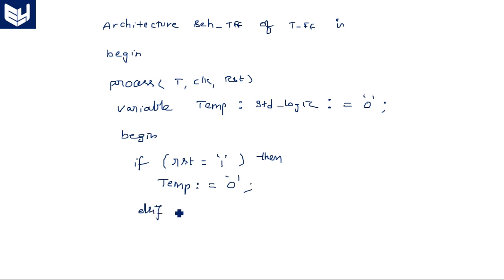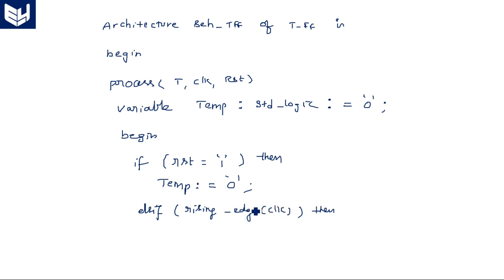Else if rising_edge(clock) — we can also write this as: clock'event and clock = '1', which is equivalent to rising_edge(clock). Until we have a rising edge of the clock, we do not check the input condition. We only check the input condition whenever there is a rising edge on the clock signal.